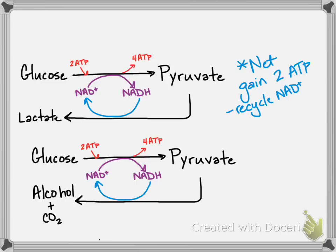This is why yeast can make us that nice fluffy bread, because the CO2 produced fills that dough with air, and so when it bakes, it's all nice and delicious and fluffy. So we have yeast and fermentation to thank for bread, as well as a number of other products — soy sauce, there are types of fermentation that produce yogurt, so many things. Of course, your alcoholic beverages — but that is fermentation in a nutshell.